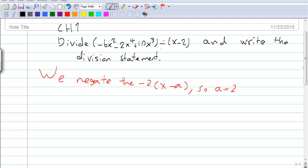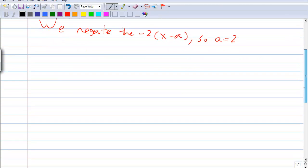First, we negate the -2 in (x - 2), so a = 2.